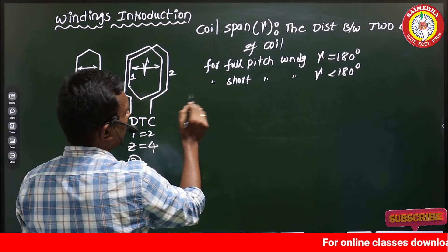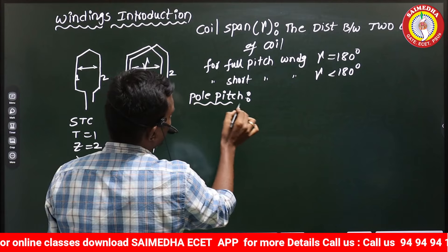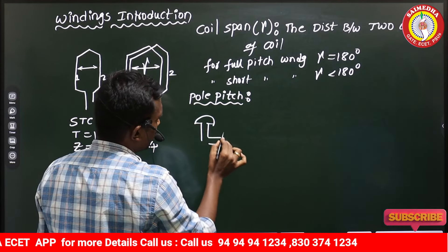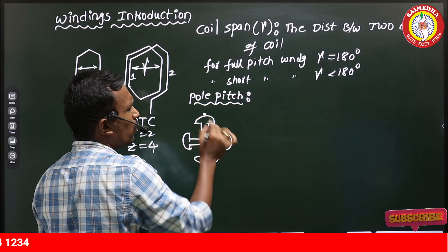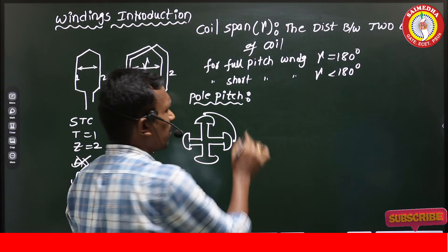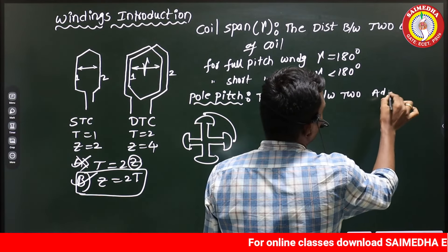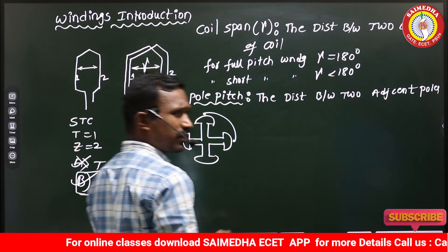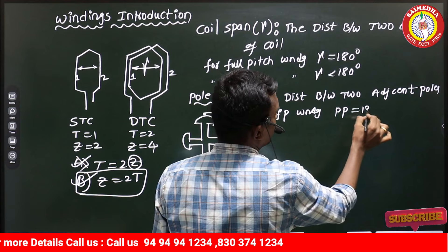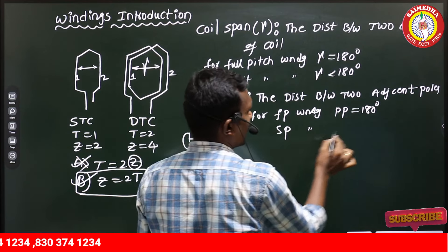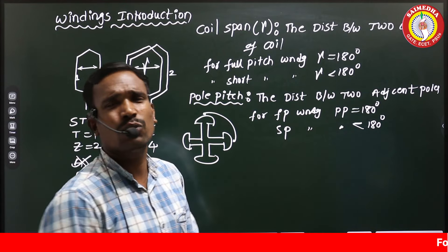What is the pole pitch? The pole pitch is the distance between two adjacent poles. For example, in a four-pole machine, the distance between two adjacent poles is the pole pitch. For full pitch winding, the pole pitch equals 180 degrees. For short pitch winding, the pole pitch is less than 180 degrees. For over pitch winding, the pole pitch is greater than 180 degrees.